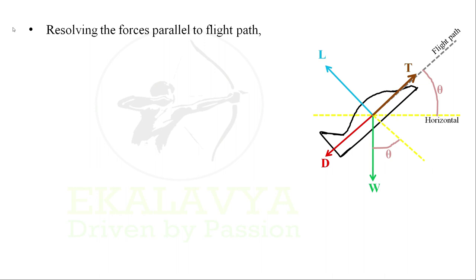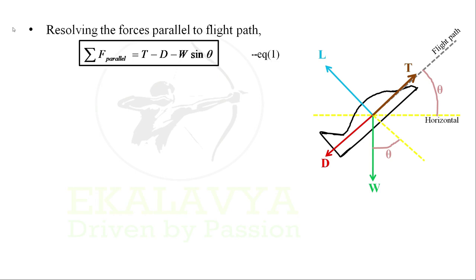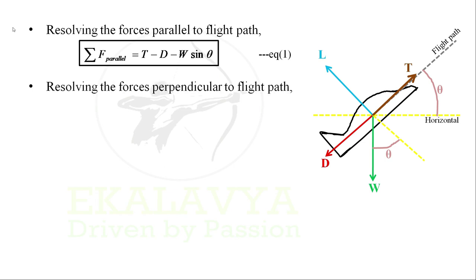Resolving the forces parallel to the flight path — considering forces along the flight path to be positive and forces opposite to be negative — we have thrust T acting along the flight path, drag D acting opposite to the flight path, and weight W inclined to the flight path. Resolving W along the flight path gives W sin θ. Summation of forces parallel to the flight path equals T minus D minus W sin θ. Let us denote this as Equation 1.